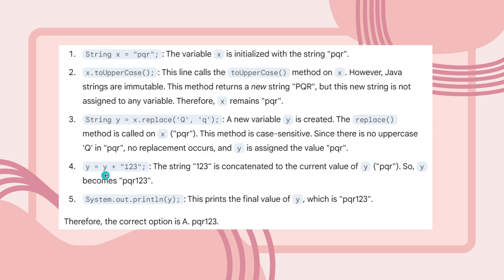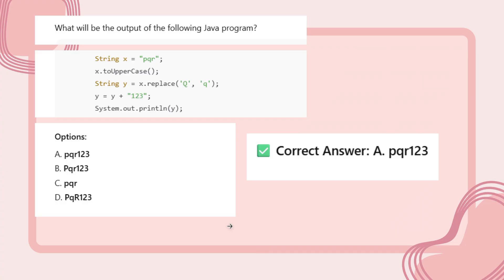Now y equals y plus 123. This is a string, not a number. See the double quotation marks. 123 is a string that is concatenated to the current value of y (PQR). So y becomes PQR123. This is not addition, it's concatenation. System.out.println(y) prints the value of y, which is PQR123. So the correct option is A: PQR123.